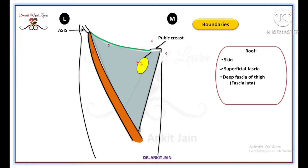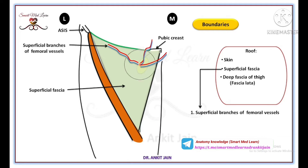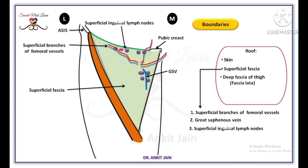The superficial fascia overlying the roof contains superficial branches of femoral vessels, which come out from the saphenous opening after piercing the cribiform fascia. The great saphenous vein runs over the superficial fascia, then passes through the saphenous opening after piercing the cribiform fascia.